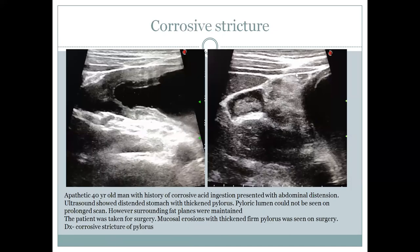A 40-year-old man with a history of ingestion of corrosive acid was evaluated. On ultrasound there was thickened pylorus, and on surgery erosions with thickened pylorus were seen. The diagnosis was of corrosive acid stricture of the pylorus.